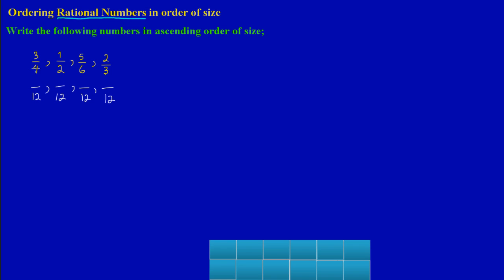Now, 4 into 12 goes three times, and three threes give me nine — so three-quarters becomes 9 over 12. Two into 12 goes six times, and six times one is six — so one-half becomes 6 over 12. Six into 12 goes two times, and two fives give me ten — so five-sixths becomes 10 over 12. Three into 12 goes four times, and four twos give me eight — so two-thirds becomes 8 over 12.